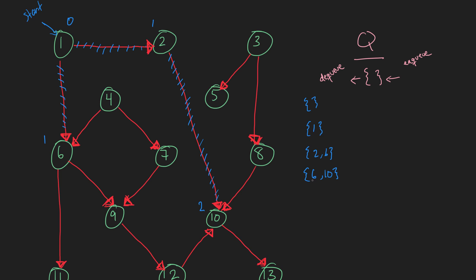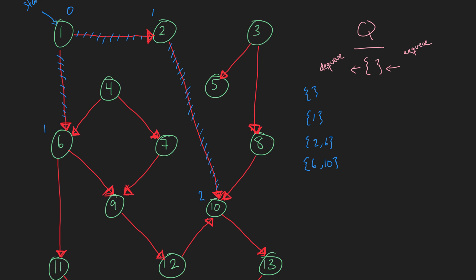Now 6 is up next in the queue. We dequeue 6 and enqueue its adjacency list, which is 9 and 11. Both are at a distance of 2. So the queue now has 10, 9, and 11.